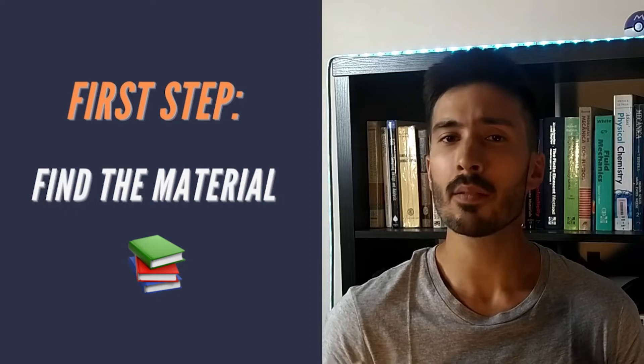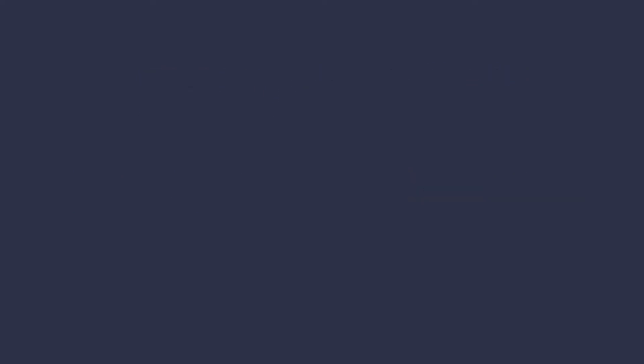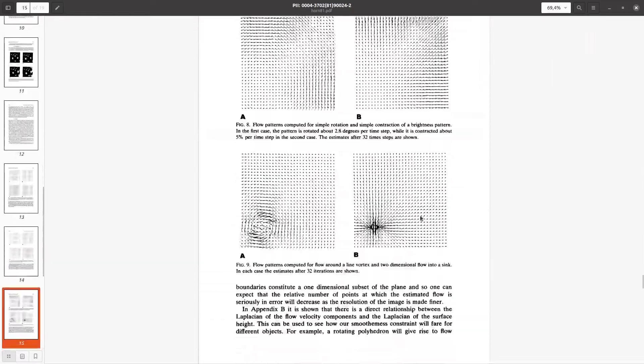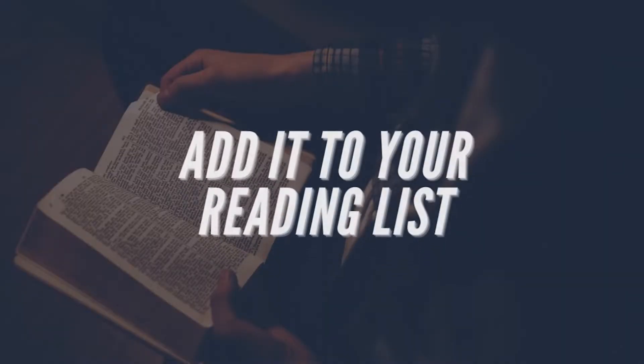First, we must find the material, and we can divide this into two parts. Before trying to find something, we must know what it is we are looking for — we need names. We need the titles and authors of relevant papers, theses or books. Perhaps the best starting point is some paper or thesis your supervisor got you to get things started. Go to the reference section and knock yourself out. If it is a good paper or thesis, it will contain a treasure trove of relevant material. Add it to your reading list.